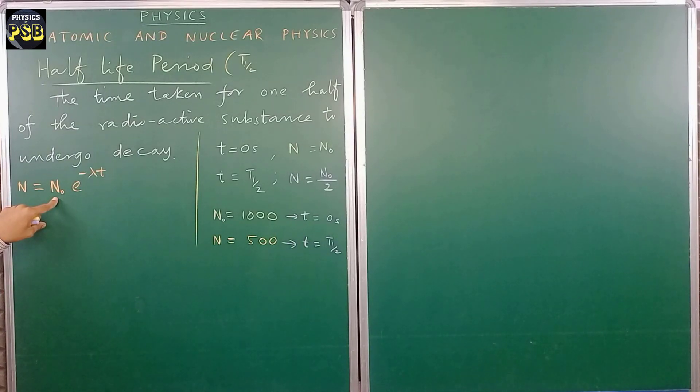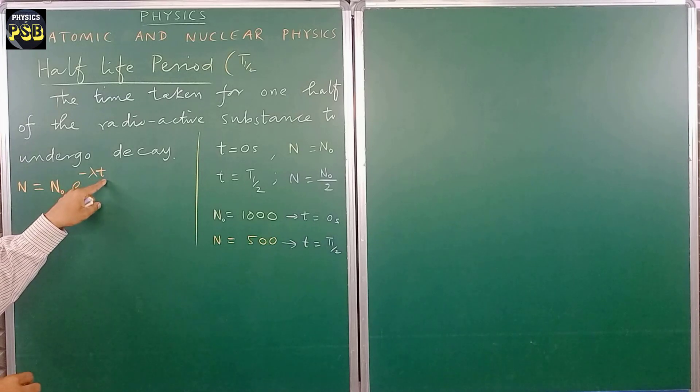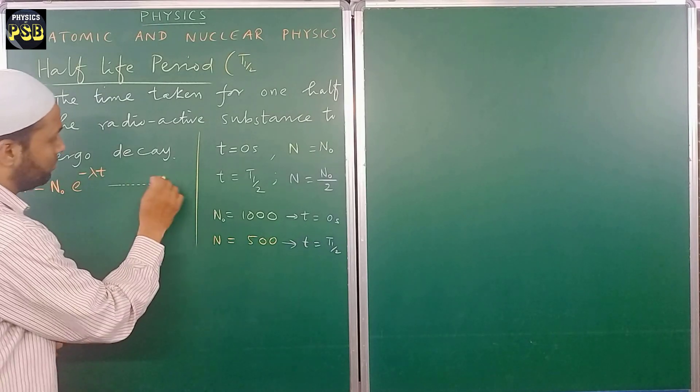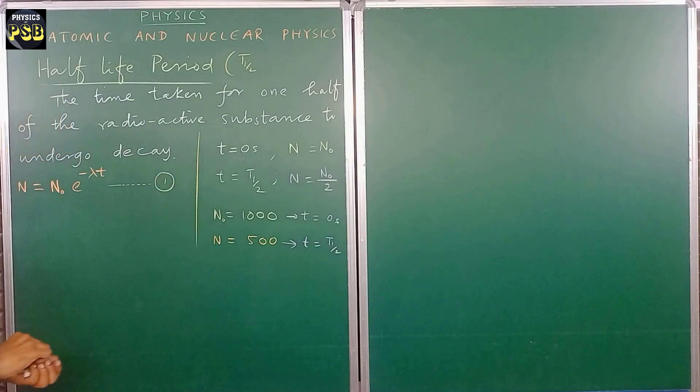Here N naught is number of radioactive atoms present initially, and N stands for number of atoms of radioactive substance at any given time. And here t is the time and lambda is nothing but the decay constant. I take this as equation number one.